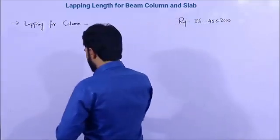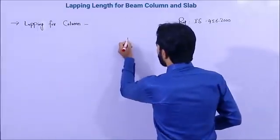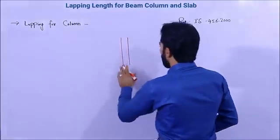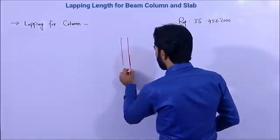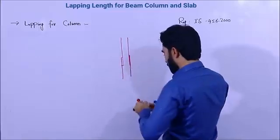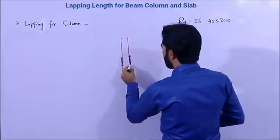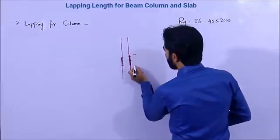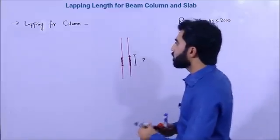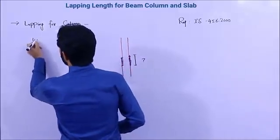The first one is lap length for column. Since the column is a compression member, the formula for lap length in compression is 45d — where d is the diameter of the steel rod.